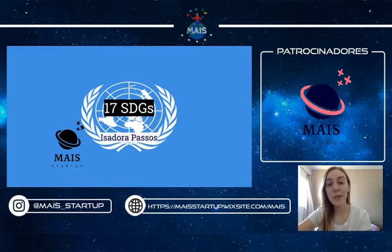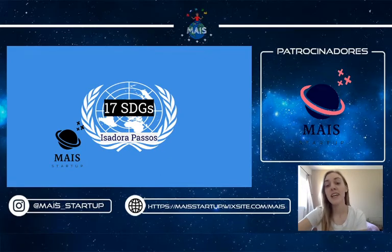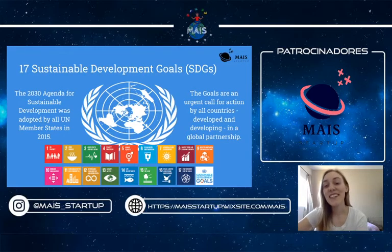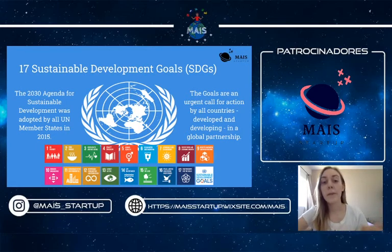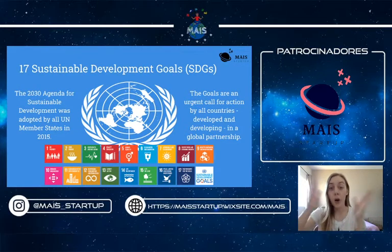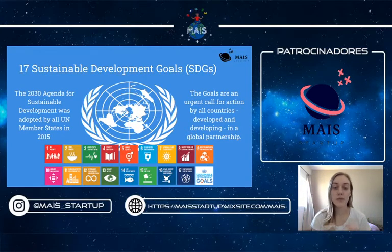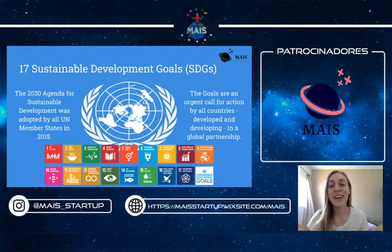Hey, I'm Isidora and today we're going to be going over the 17 SDGs. Let's start from the beginning. Do you know what SDGs are? SDGs are Sustainable Development Goals and there are 17 of them. The 2030 Agenda for Sustainable Development was adopted by all UN member states in 2015. UN is the United Nations and the goals are like an urgent call for action by all countries — including developed, developing, and underdeveloped countries — in a global partnership, putting all countries together reaching a common goal: those 17 goals.